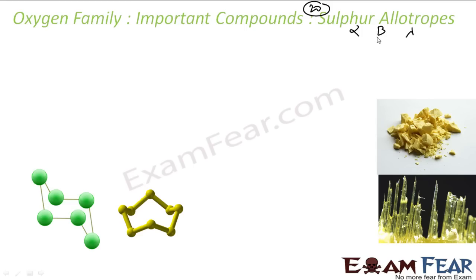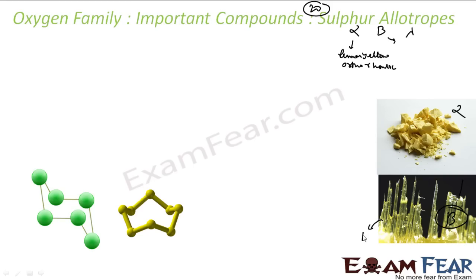The alpha allotrope of sulfur is lemon yellow in color and the crystal shape is orthorhombic. Then we have beta sulfur, which is bright yellow in color and has a monoclinic crystal system.